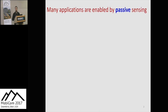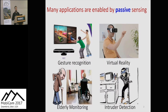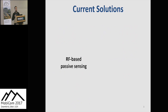Nowadays we have seen many exciting passive sensing applications. By passive here, we mean that there is no need to have any device attached to or held by a target. Those applications include gesture recognition, virtual reality, Wi-Fi based elderly monitoring, and intruder detection. Among all technologies, the radio frequency RF based passive sensing is peculiar due to the widely deployed Wi-Fi and RFID devices.